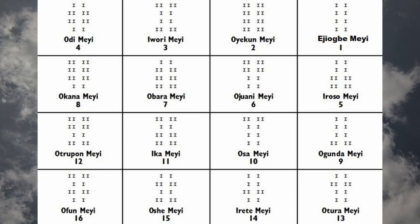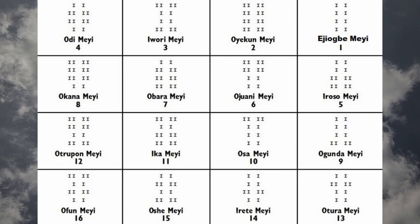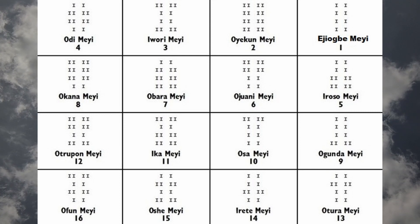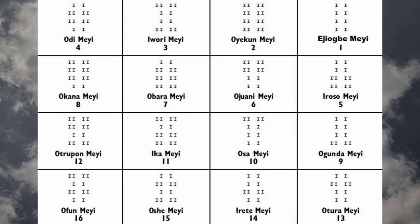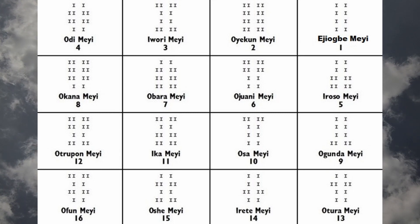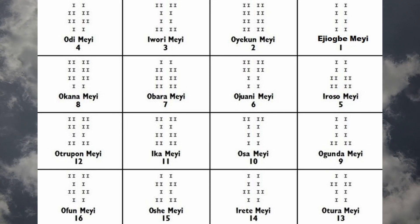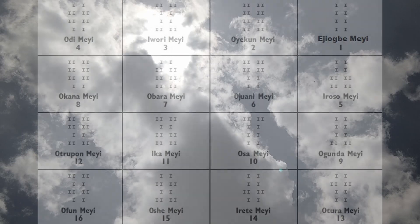These are the sixteen major Odu Ifa signs. The first minor Odu is number 17, known as Iyobi Oyekun. It is a combination of the first principle Odu, known as Iyobi, and the second principle Odu, known as Oyekun, which results in the minor Odu Iyobi Oyekun.